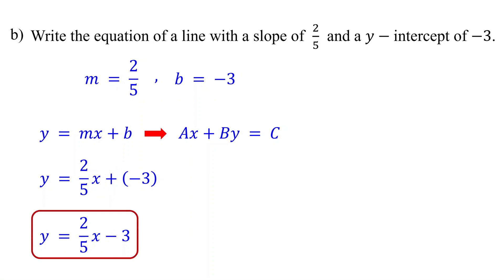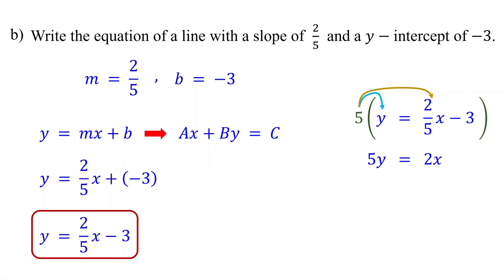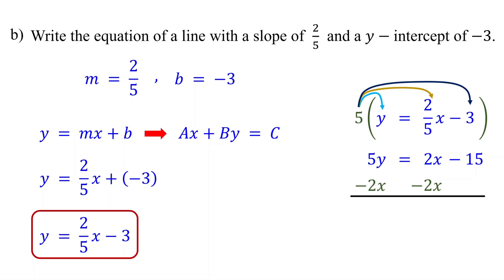Now, to convert this to standard form, start by eliminating the fraction. Multiply the entire equation by the denominator of the fraction and distribute the 5. 5 times 2 fifths x is 2x, as the 5s cancel. 5 times negative 3 is negative 15. Next, subtract 2x from both sides. On the left side, you get negative 2x plus 5y. On the right side, these cancel out, leaving negative 15.